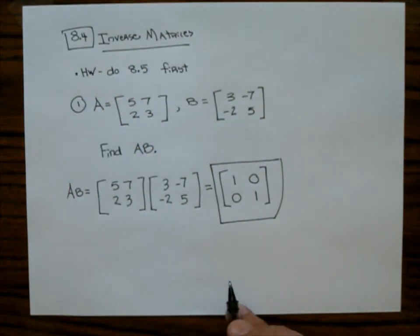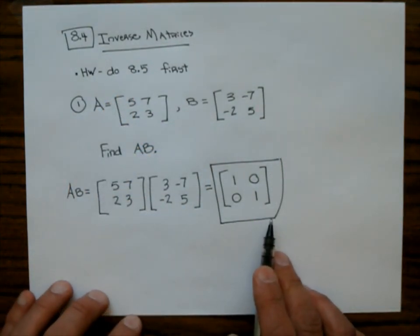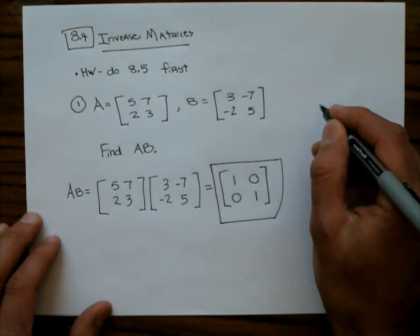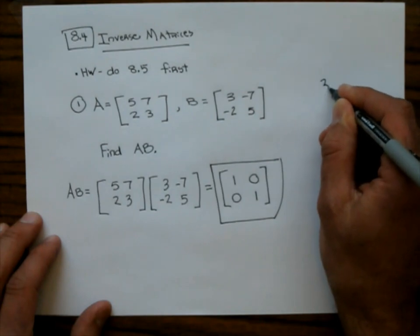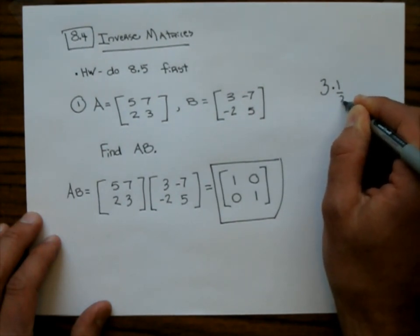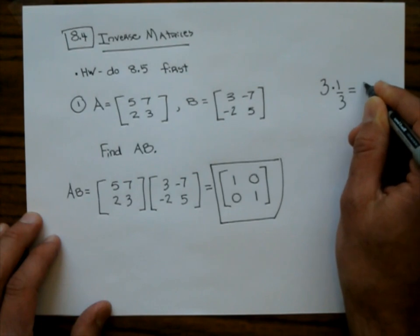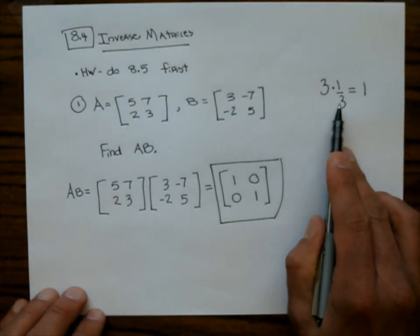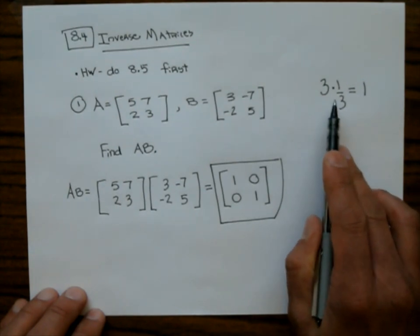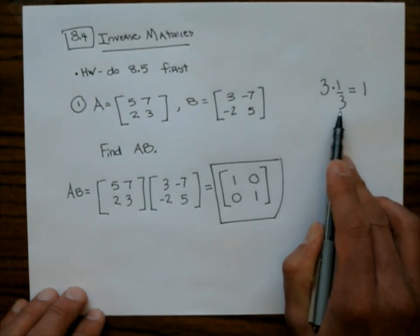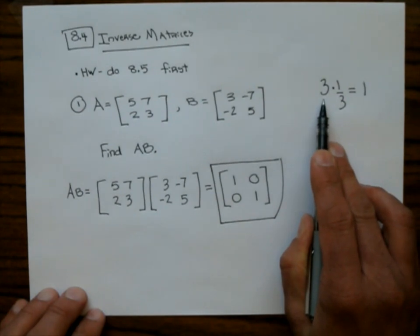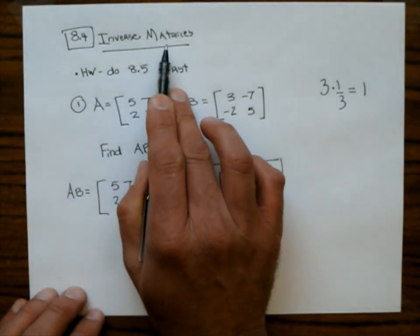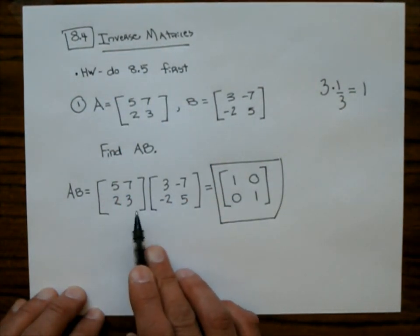What we ended up getting is the identity matrix when we multiply those together. When that happens, it's the equivalent of having a 3 multiplied by 1/3 and ending up getting 1. These are inverses — this is the multiplicative inverse, like how 1/3 is the inverse of 3.